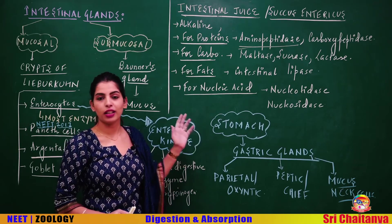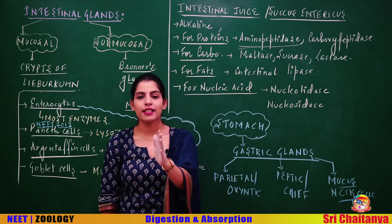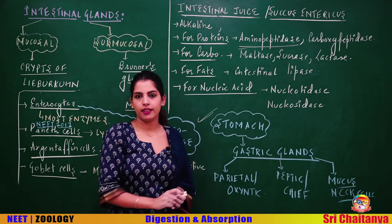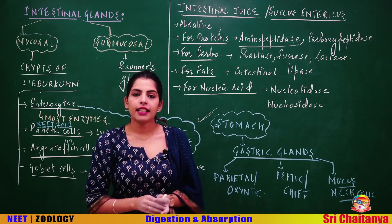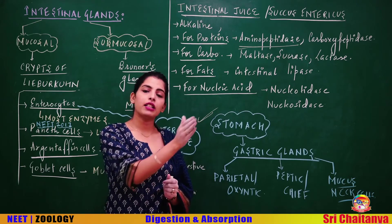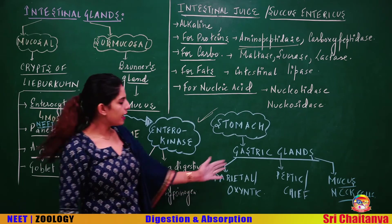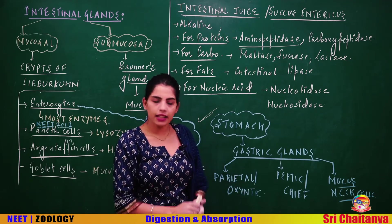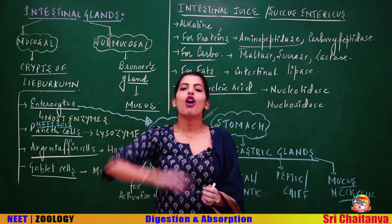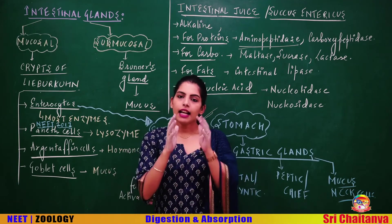Moving to a gland from which questions are asked almost every year — the gastric glands. The stomach has glands in the mucosa called gastric glands, containing different cell types: parietal cells (oxyntic cells), chief cells (peptic cells), and mucus neck cells.